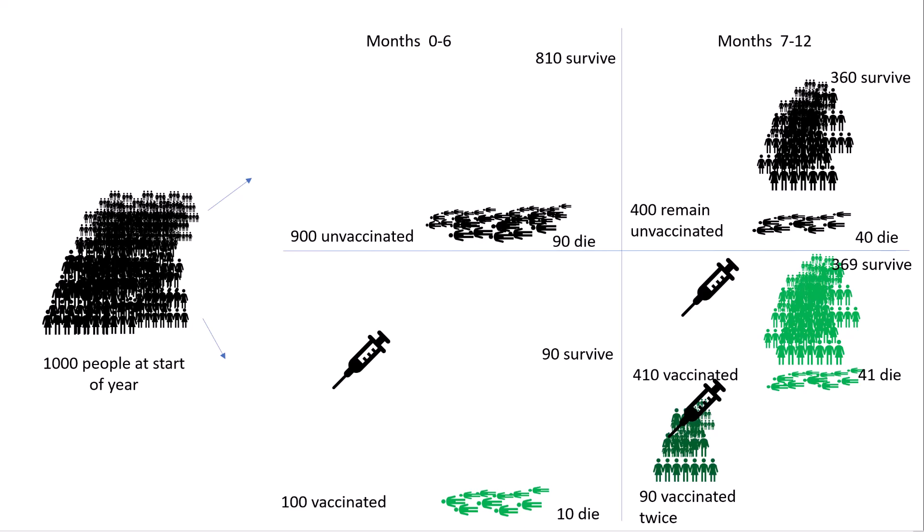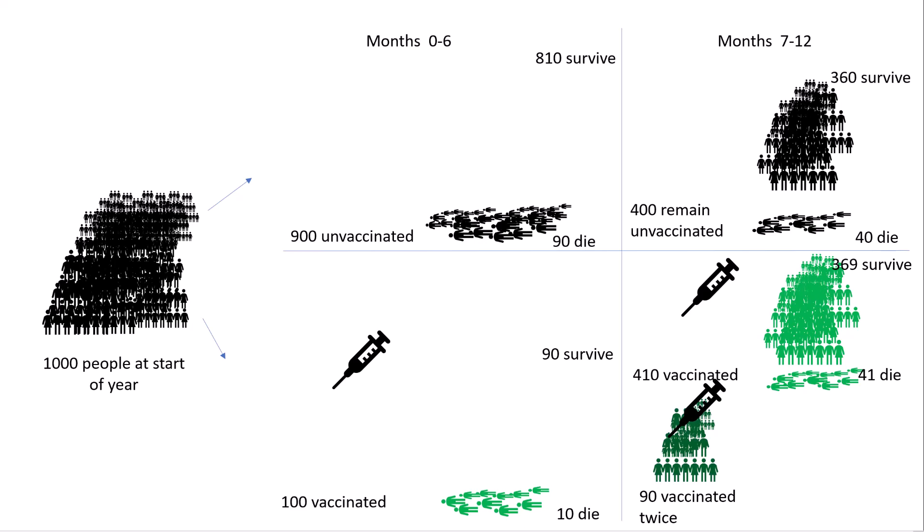360 of the unvaccinated will survive — again, it's the same 10%. Of the 410 who got their first jab at six months, 41 of those will die and 369 will survive. And of the double jabbed, nine of those will die and 81 will survive.